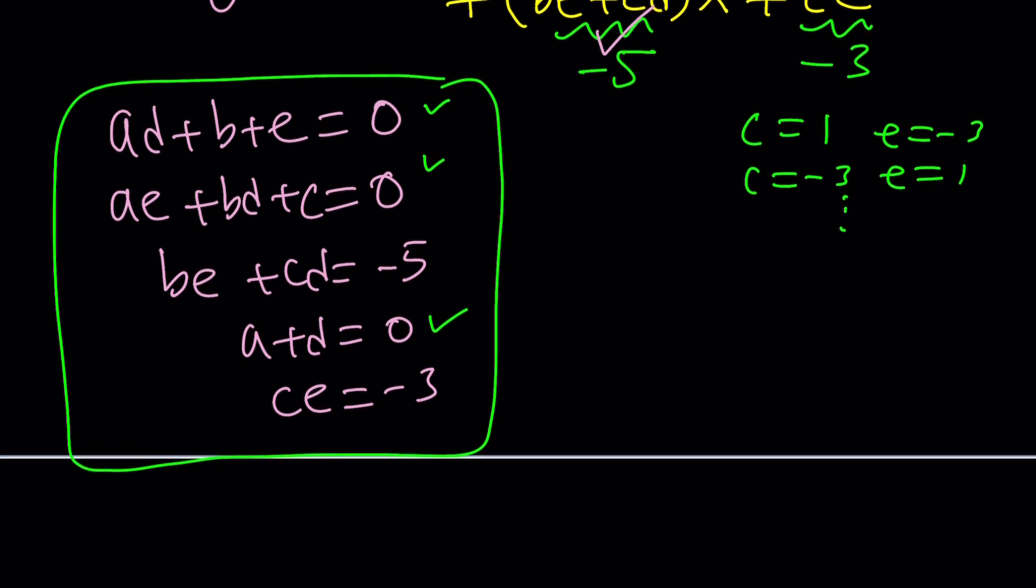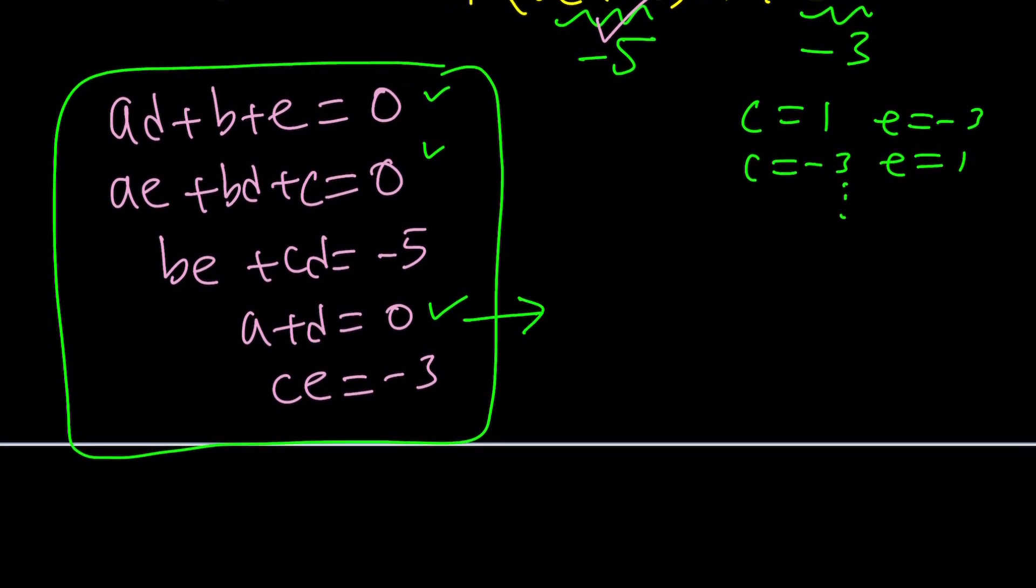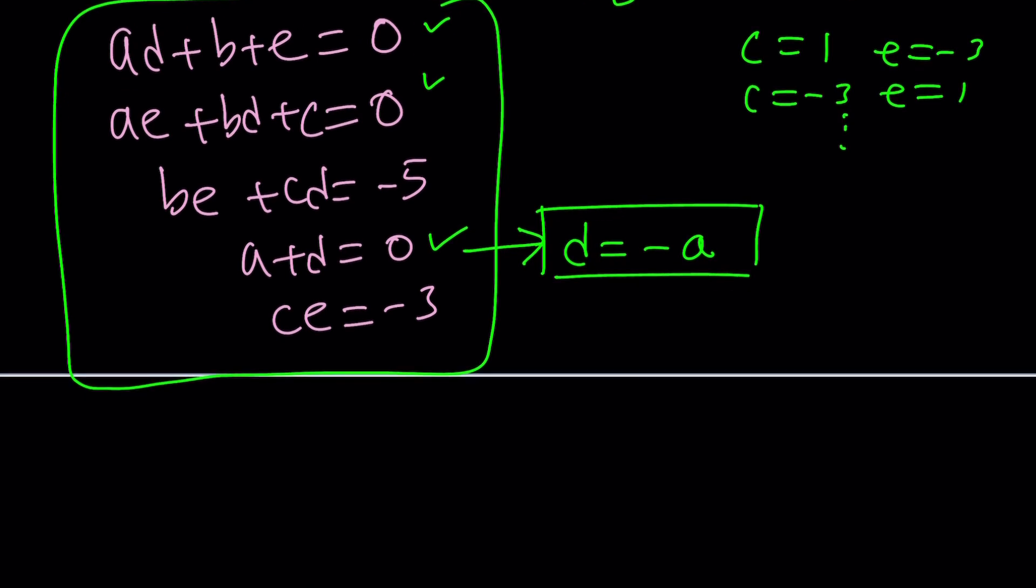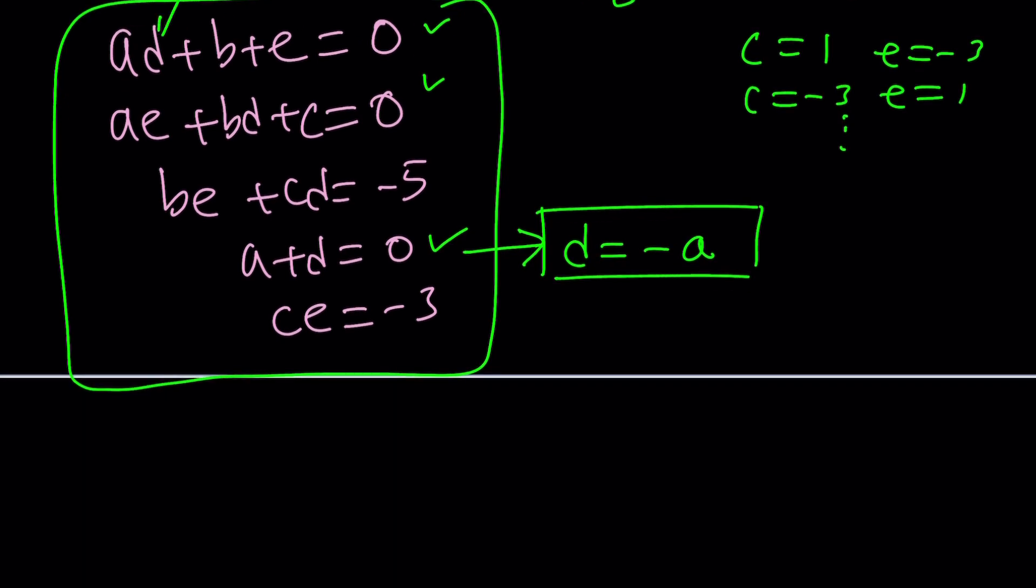So I'm probably start with the fourth equation, this one, and write d as negative a. And then start replacing d with negative a everywhere. That should give me a good progress.